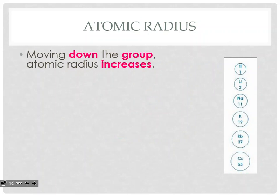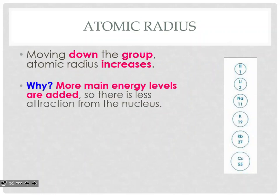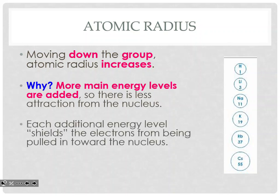The trend for radius: moving down a group, the atomic radius increases — it's kind of the snowman effect, getting a bigger snowman. Why? More main energy levels are added. This uses one of the two reasons why a trend happens. We're adding more electrons, which is going to make it bigger. We're also lessening the pull of the nucleus because of the shielding, causing the electrons to spread out a little bit more and making the size of the atom bigger. Each additional energy level shields the electrons from being pulled towards the nucleus, causing more spacing.